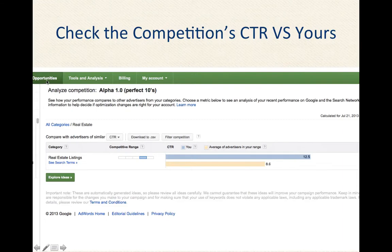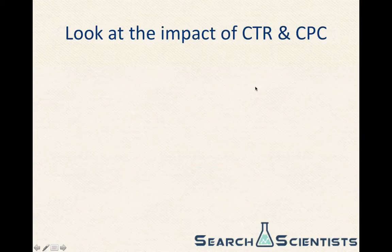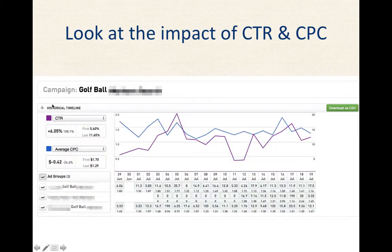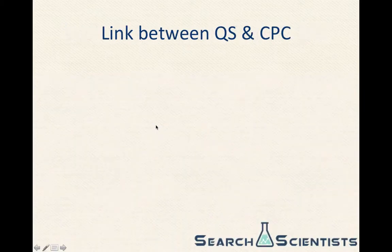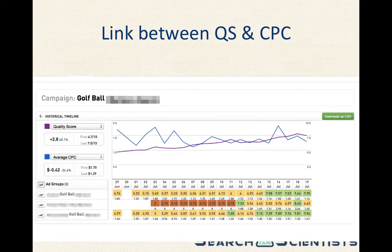And you can actually check your competitors' click-through rate versus your own. Inside AdWords, click on Opportunities, then Analyze Competition, and you'll actually see something like this — here we are in blue with a CTR of 12.5, and we can see the average of our competitors in our range is 8.6. This is from a client account — they sell golf balls. Their CTR increased from 5.6 to 11.6, a huge increase. And how did that translate to cost per click? They reduced cost per click by 25%. And of course, the intermediary between CTR and CPC is quality score. During that same period where they reduced cost per click 25%, they increased quality score 60%. So the relationship here is very important.